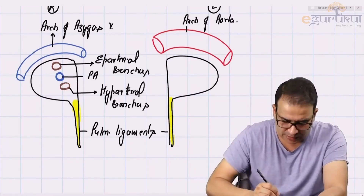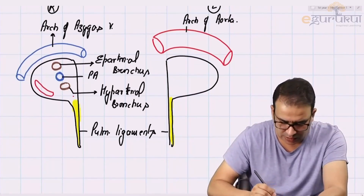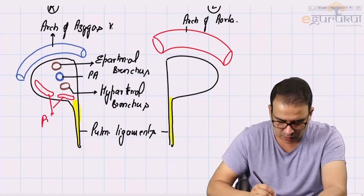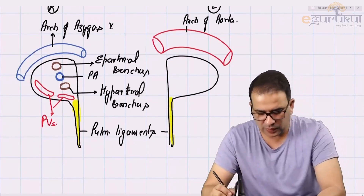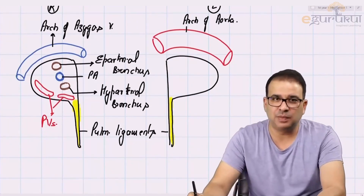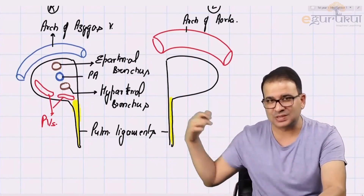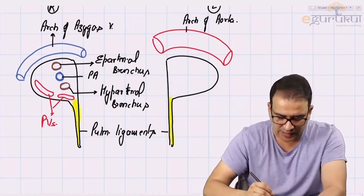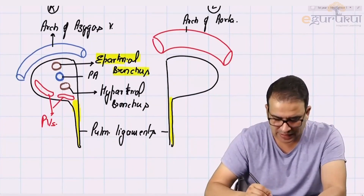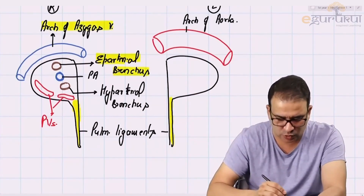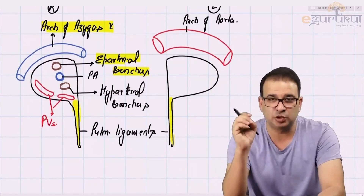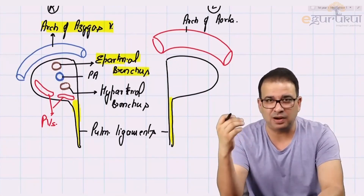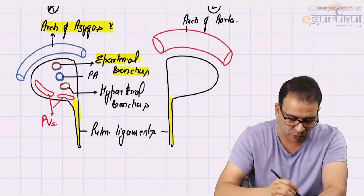The most anterior and most inferior structure, whether in the right or the left root of lung, is going to be the pulmonary veins — the ones carrying oxygenated blood. The pulmonary veins are the most anteriorly and most inferiorly placed structures in the root of the lung. On the right side, it is the eparterial bronchus which is closest to the arch of the azygous vein — that is the highest structure in the right root of lung.